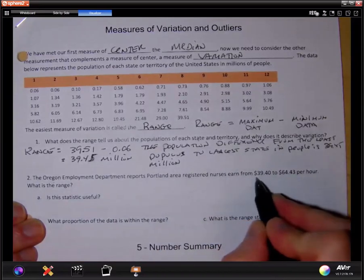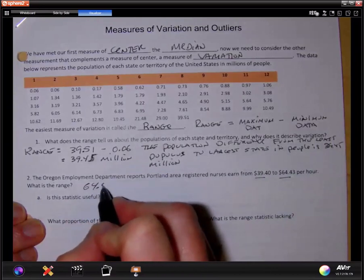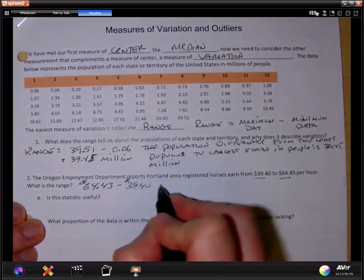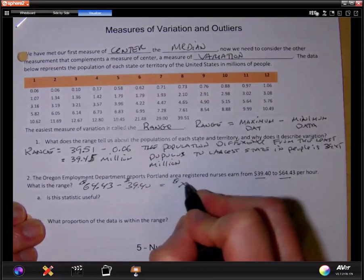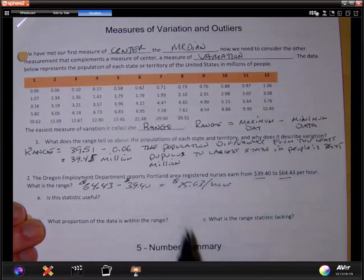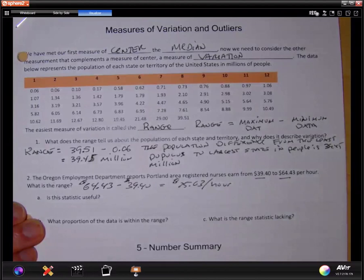How much can a Portland nurse make? If I calculate the range here, it gives me a $25 per hour difference in range. It just gives you an idea that the amount of pay per hour can vary drastically for a Portland area registered nurse.